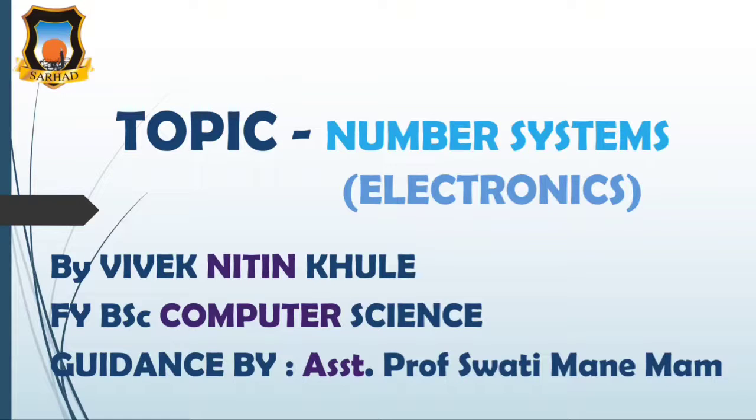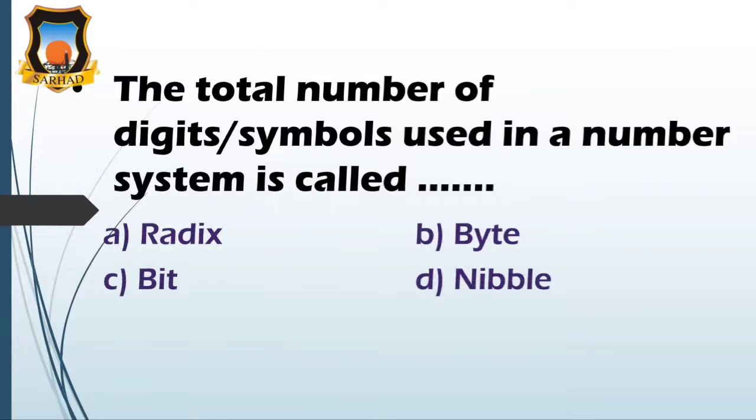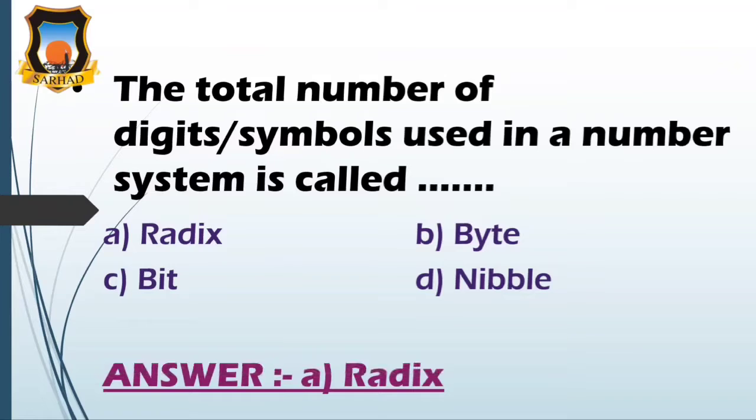So here we go. My first question is: the total number of digits and symbols used in a number system is called - option A radix, option B byte, option C bit, option D nibble. So the correct answer is radix. Radix is also called as base and each number system has different base. So option A is right, radix.